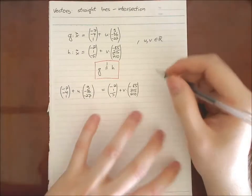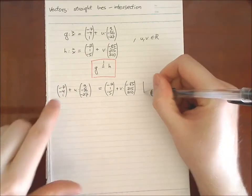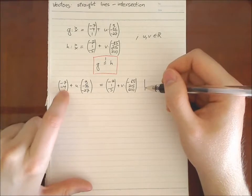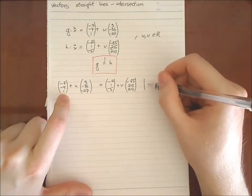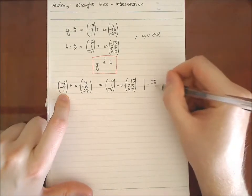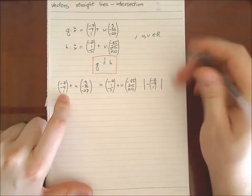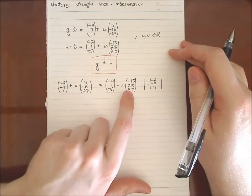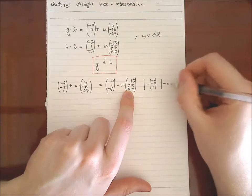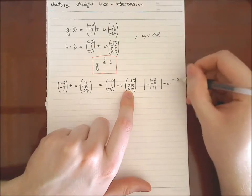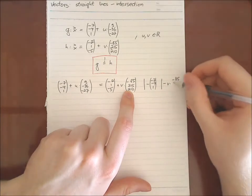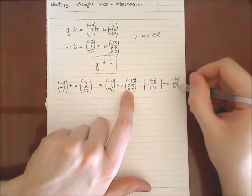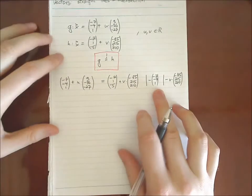And then what we want to do is we put this vector to the right side. So we say minus, minus seven, minus four, and one. And we put the v vector to the left side. So we say minus v times minus 85, 215, 210.